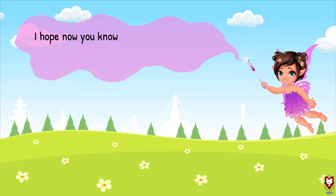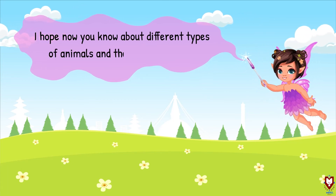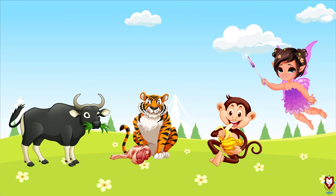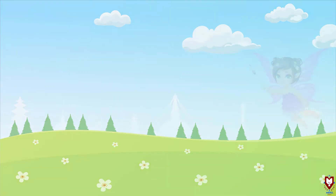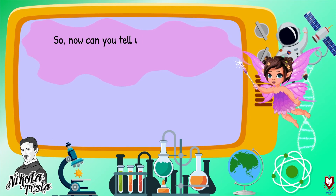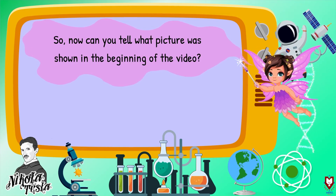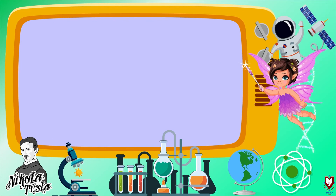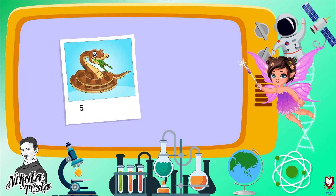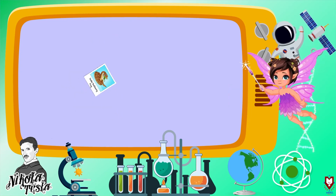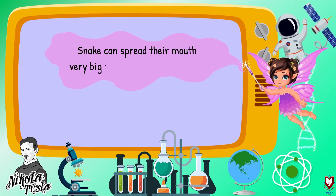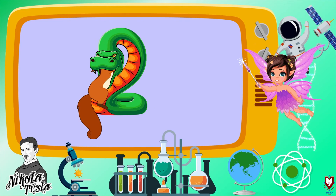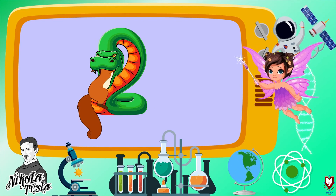I hope now you know about different types of animals and their eating habits. So now can you tell what picture was shown in the beginning of the video? That was a picture of a snake swallowing a frog. Tiyo picture maa dhekhna saksh ho ki sarpa le bhyagu talai singgai nilna laghe ko chha. Snakes can spread their mouth very wide to eat big animals also. Sarpa le thulo thulo animals lai khana ko laghi aafno mug jati thulo paani kholna saksh.